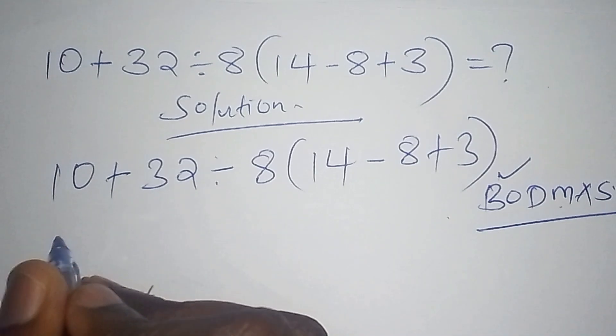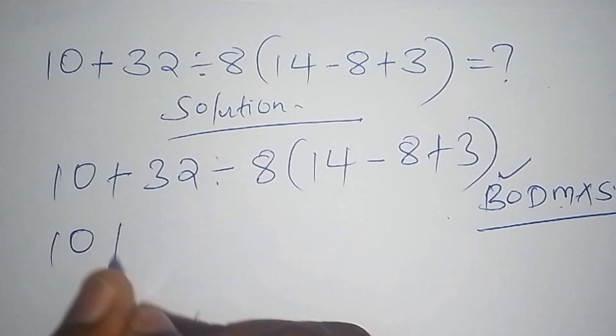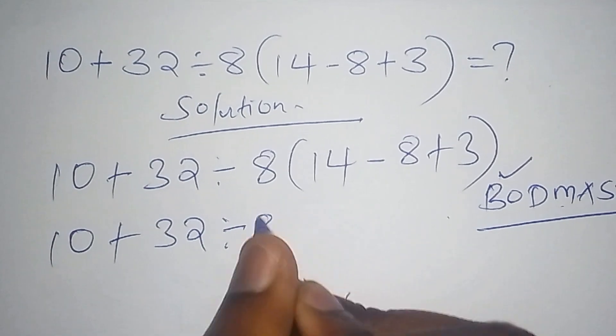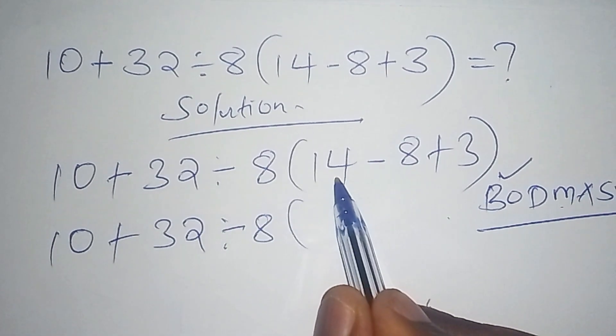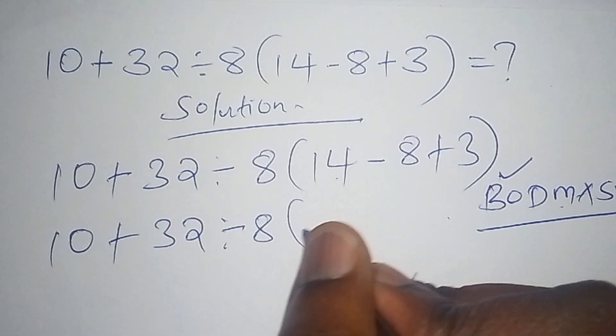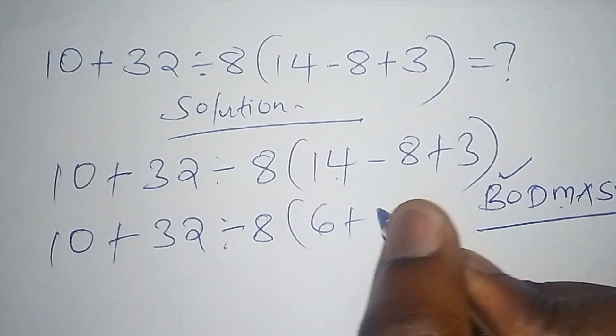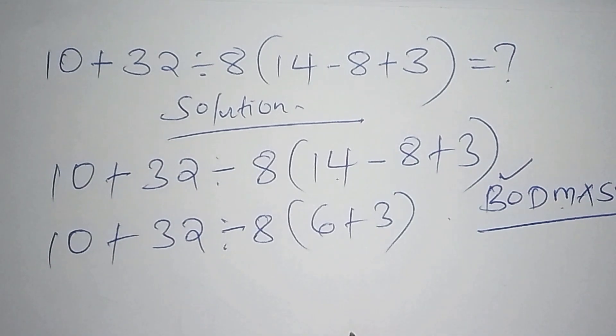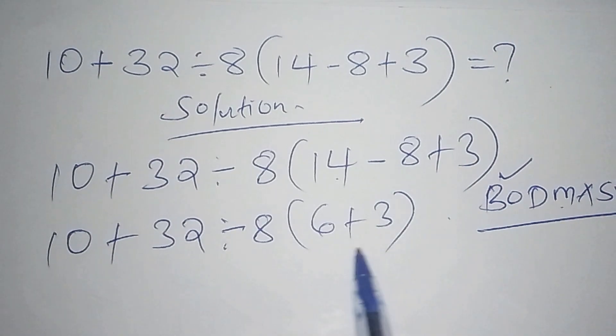So we now have to work out the number inside the bracket. So this is to mean that we are going to start with 10 plus 32 then divide by 8. So into bracket, this one is now 14 minus 8 and 14 minus 8 we shall have 6 then plus 3. Then we close the bracket.